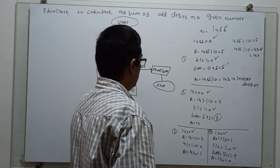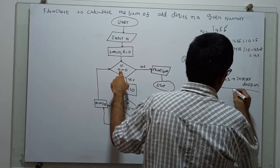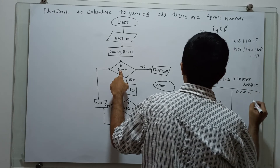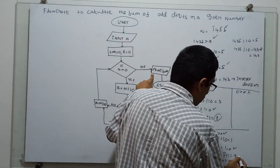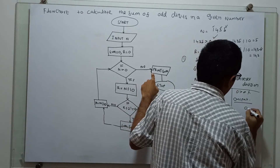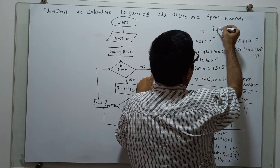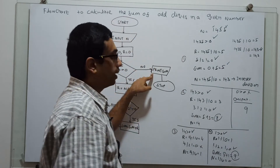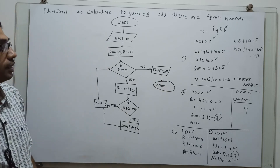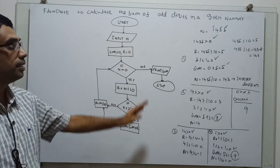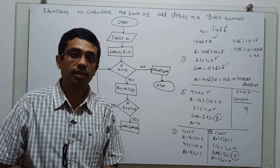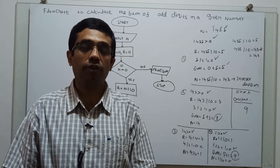Finally, I am checking n greater than 0: 0 greater than 0 is false. So I print the value of sum, which is 9. The odd digits 1, 3, and 5 were added: 1 plus 3 is 4, 4 plus 5 is 9 — it works correctly. This is the flowchart to calculate the sum of the odd digits in a given number. Thanks for watching. Please subscribe to my channel for forthcoming videos. Thank you.